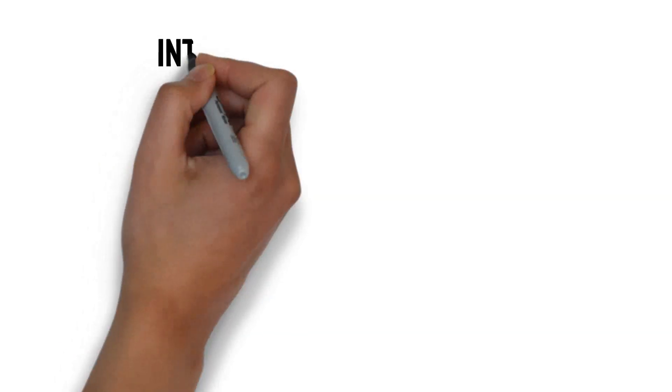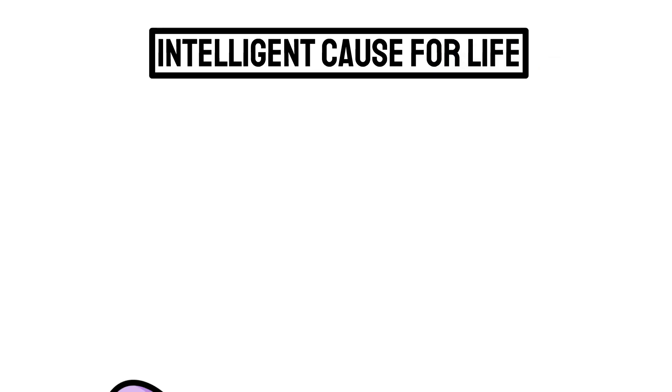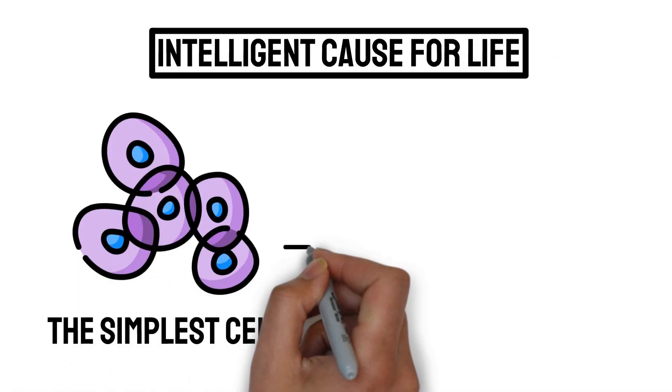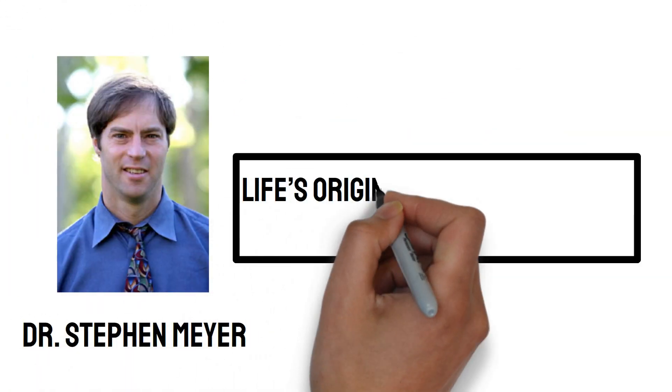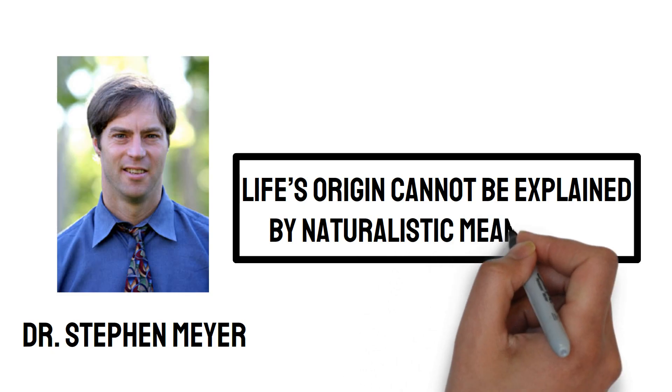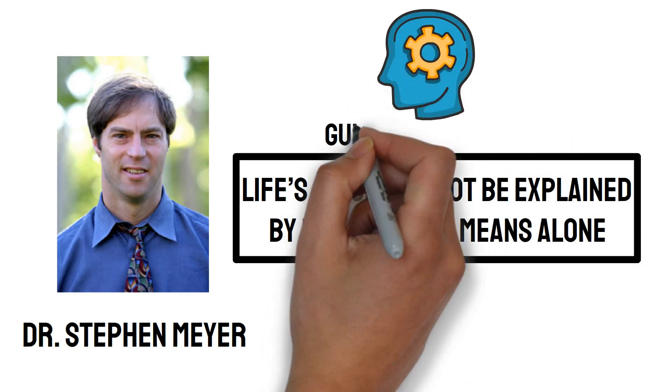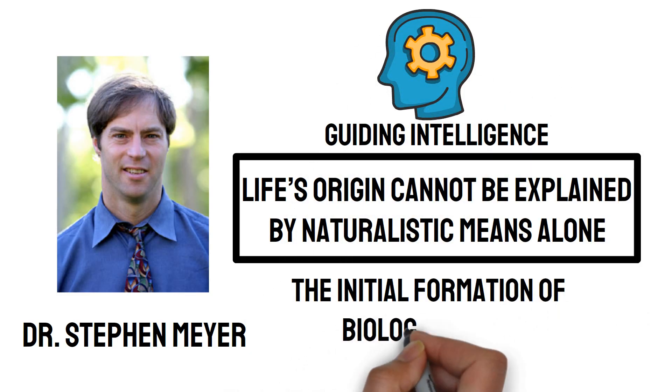Then there's the intelligent cause for life. The complexity of the simplest cell is far beyond what random chemical reactions can achieve. Dr. Meyer contends that life's origin cannot be explained by naturalistic means alone. Instead, it points to a guiding intelligence behind the initial formation of biological life.